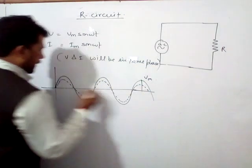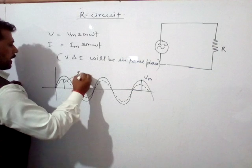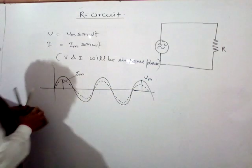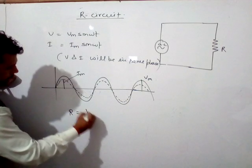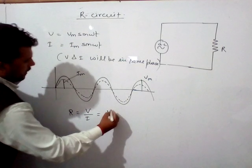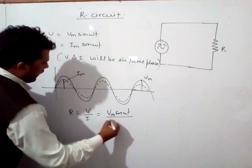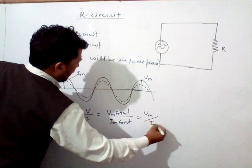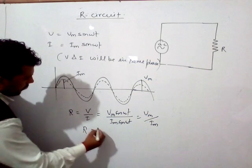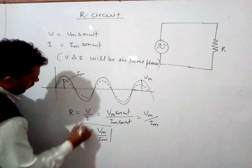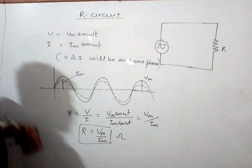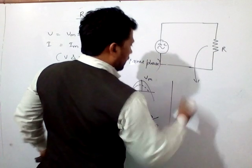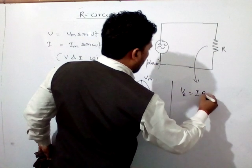The ratio of voltage and current gives the resistance: R equals Vm sin(ωt) divided by Im sin(ωt), which simplifies to R equals Vm upon Im, in ohms. Simply put, the voltage at the resistor Vr equals I times R.